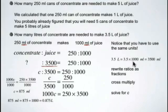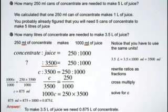In this case, we're going the other way. We want to go from milliliters back to liters. So from milliliters back to liters, we're going to divide by 1,000 to get 0.875 liters. So the answer is, to make 3.5 liters of juice, we need 0.875 liters of concentrate.